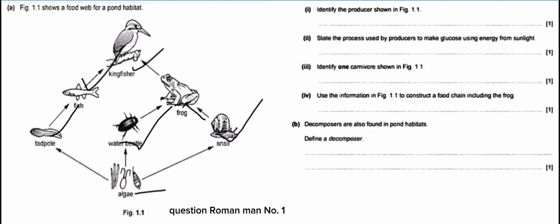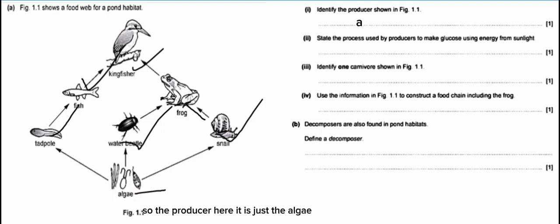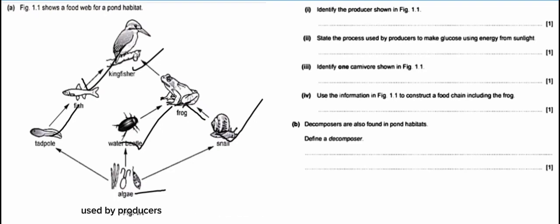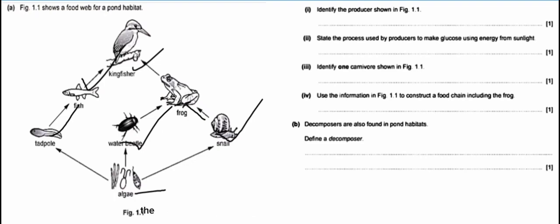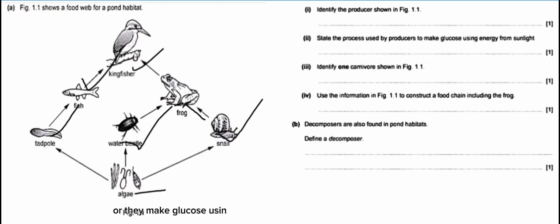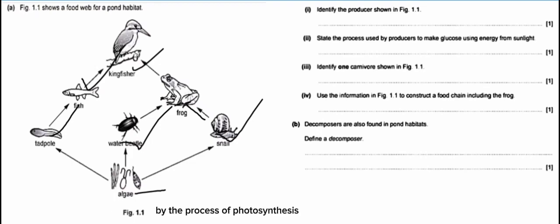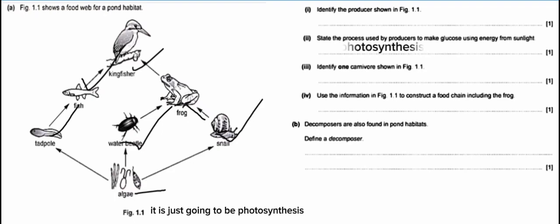Question roman number one: identify the producer shown in figure 1.1. The producer here is just the algae. Roman number two: state the process used by producers to make glucose using energy from sunlight. The algae are like plants, so they manufacture glucose using energy from sunlight by the process of photosynthesis. So the answer is photosynthesis.